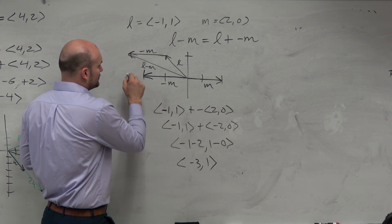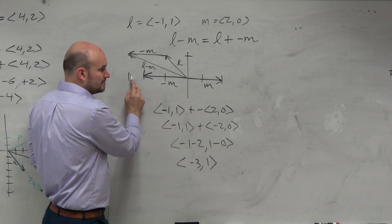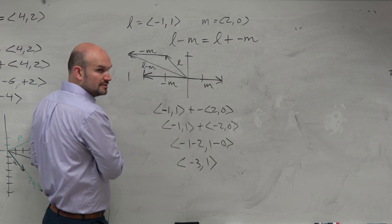And now you can see negative 1, 2, 3, up 1. See how it works? Negative 3, up 1. There's your vector.